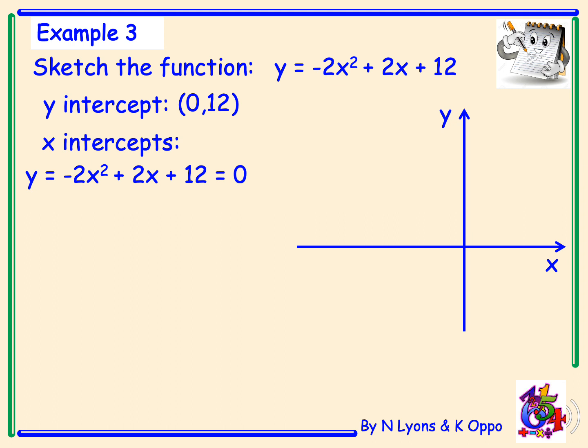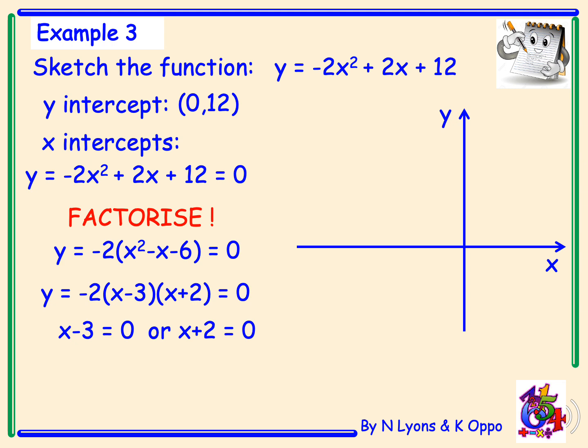From there we must factorize. So first of all, let's take out a common factor of -2, so that we're not factorizing a negative x². And if we do that, we're left with x² - x - 6 inside our bracket. And then this can be factorized to give -2(x - 3)(x + 2). We'll now make each bracket equal to 0. So x - 3 = 0, or x + 2 = 0. Therefore our roots are x = 3 and x = -2.